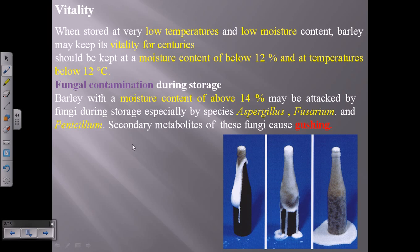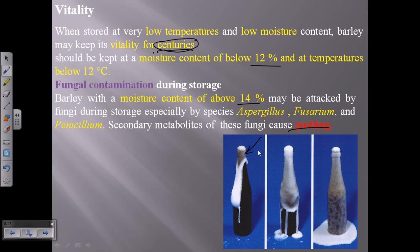Regarding the vitality of malt or barley, when stored at very low temperature and low moisture content, barley can remain viable for centuries. Storage at 12°C and below 12% moisture is ideal. Higher moisture content can spoil the barley — above 14% moisture for several days can lead to fungal contamination from organisms like Aspergillus and Fusarium, which produce secondary metabolites causing a condition called gushing, resulting in foamy beer.